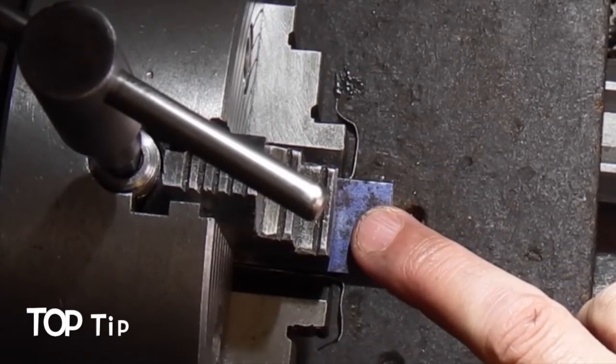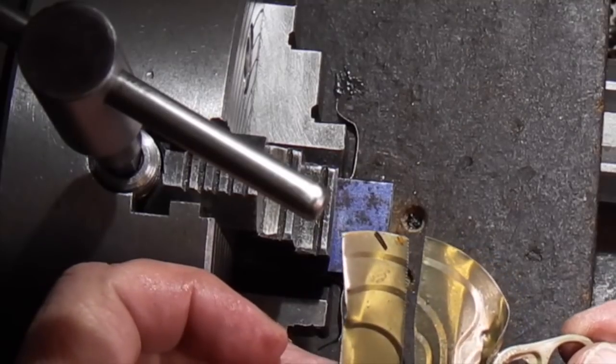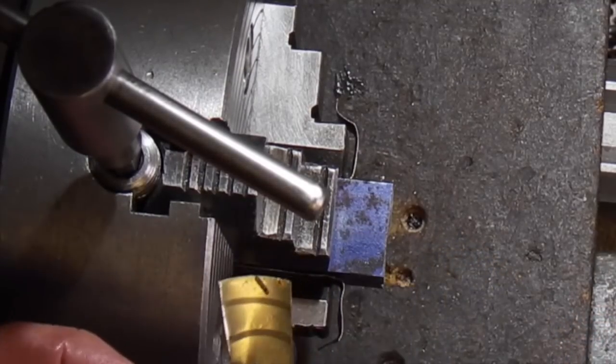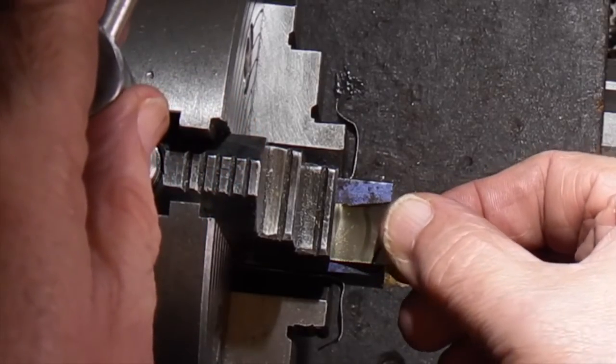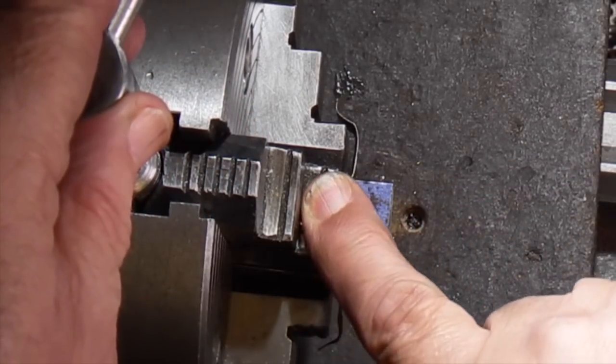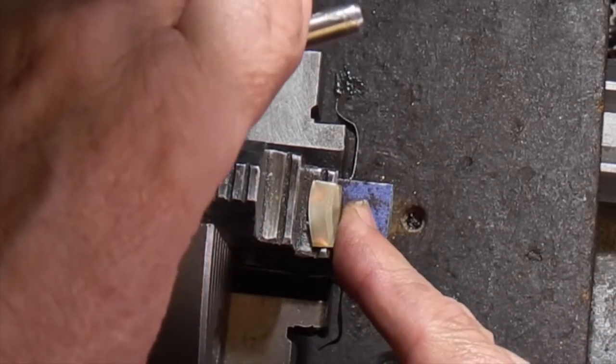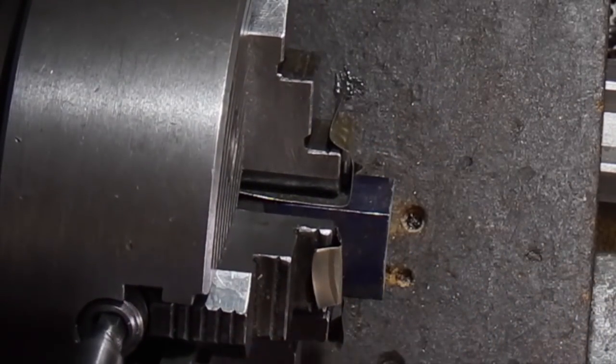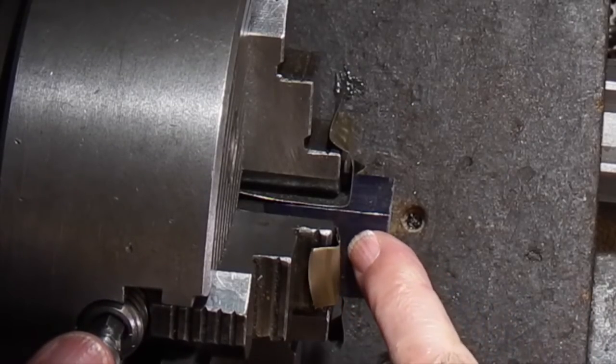When you need to protect your work from indentations from the chuck jaws, if you get yourself a lid of a tin can, cut off a strip that will go under the chuck jaw, lift it up and just bend it over. Then when you tighten your chuck up it will tighten up on this and not damage the surface.